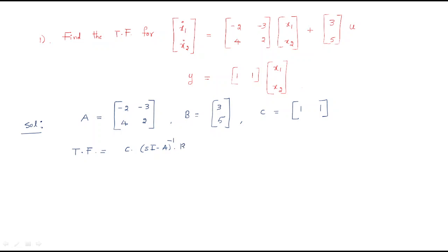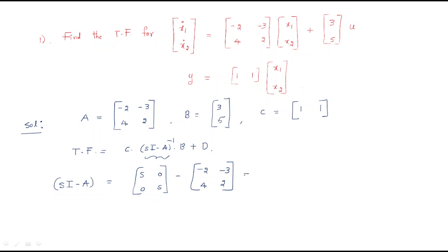The transfer function formula is T(s) = C(sI - A)⁻¹B + D. First, find sI - A: sI is [[s, 0], [0, s]], and subtracting A = [[-2, -3], [4, 2]] gives sI - A = [[s+2, 3], [-4, s-2]].